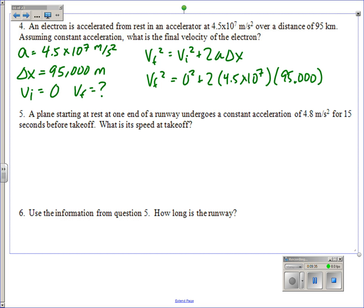4.5 times 10 to the 7th. Make sure you use that ee button. 95,000 times 2, and I'm going to square root that. Get 0.29.